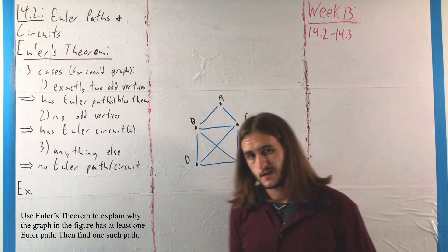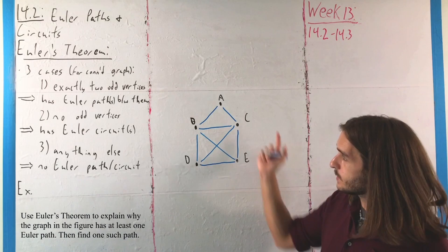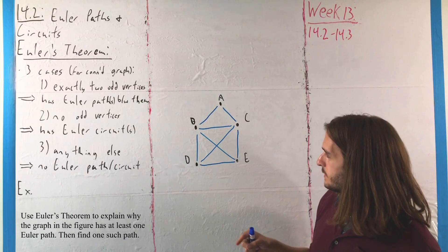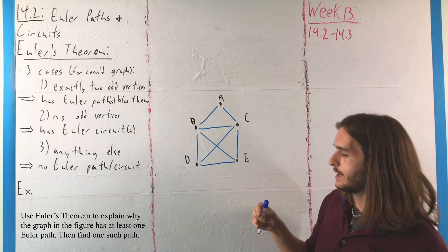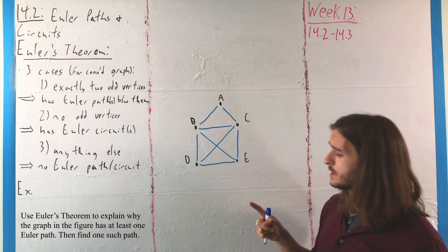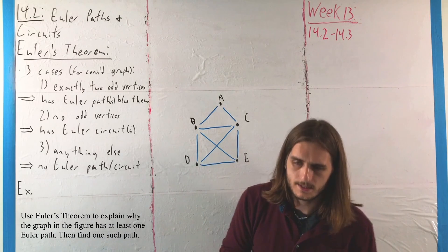So again, forgiving my illustrative skill here, we can recognize that with this graph, with this collection of vertices and edges, we have that A has degree 2, B has degree 4, C has degree 4, E has degree 3, and D has degree 3.